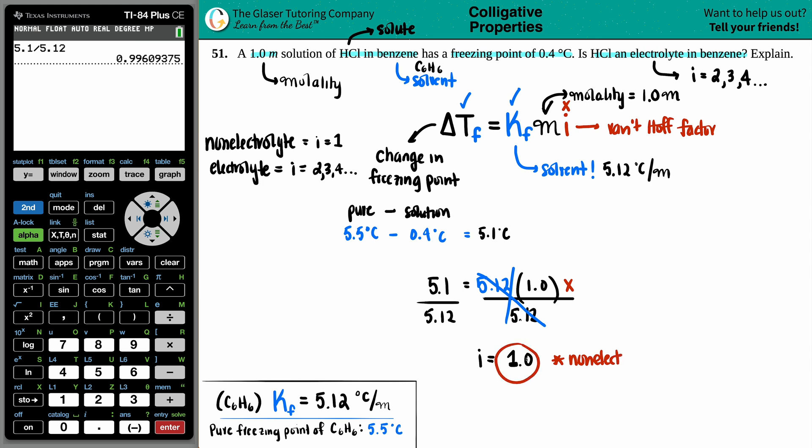And 1.0 means that it is a non-electrolyte. 1 just means that you had this one compound chilling in the benzene. This did not break up into two individual ions because then your i-value would be 2. So the Van't Hoff factor came out to be 1, which means it's a non-electrolyte.